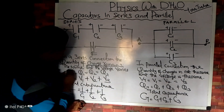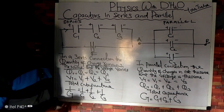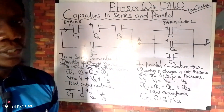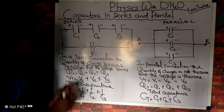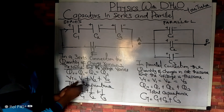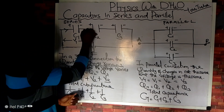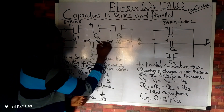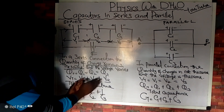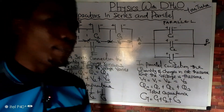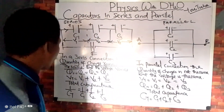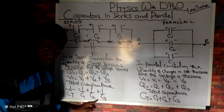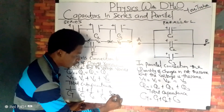In series, the charge remains the same but the voltage varies. The quantity of charge in the first capacitor is the same as in the other capacitors, but the voltage is not the same. The total voltage recorded in the circuit is equal to the sum of the voltages: V1 plus V2 plus V3. The formula for combining capacitors in series is: one over C total equals one over C1 plus one over C2 plus one over C3. This is actually the opposite of combining resistors in series.